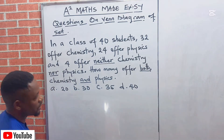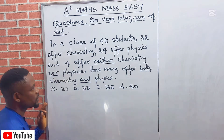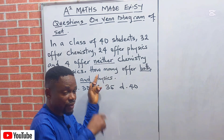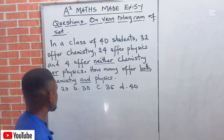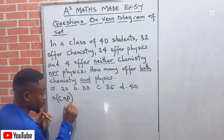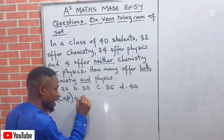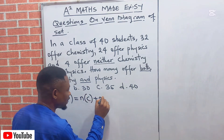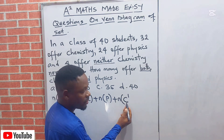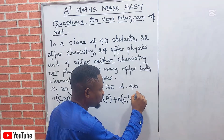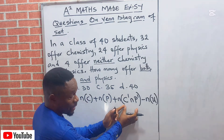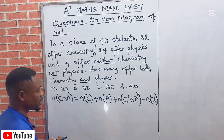In less than a second, the answer will appear. Anytime you hear the word 'neither nor,' it means it is not chemistry and it is not physics — which means it falls outside both sets. The formula is: the cardinality of chemistry intersection physics equals the cardinality of chemistry, plus the cardinality of physics, plus the cardinality of neither chemistry nor physics, minus the cardinality of the universal set. This is what is added when there is a 'neither' in the question.